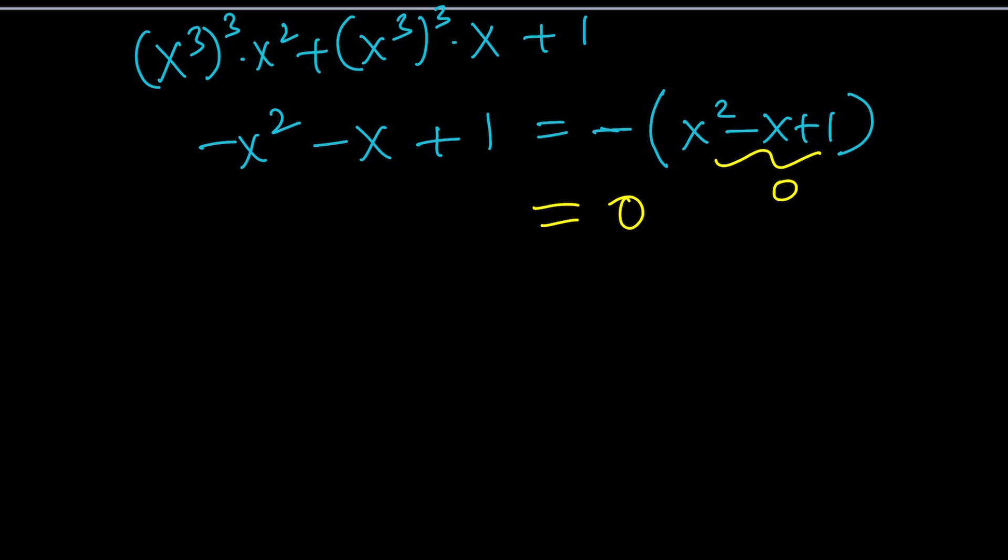Which means x to the 11th plus x to the 10th plus 1 is divisible by x squared minus x plus 1. If you do long division, you're going to get the answer. And that's going to be a nonic polynomial.